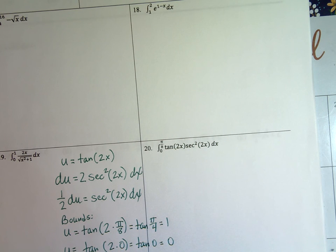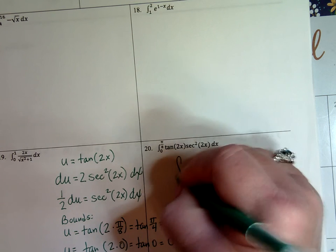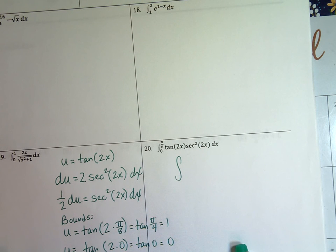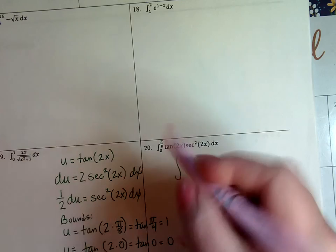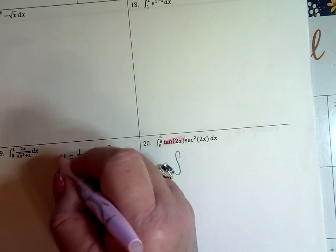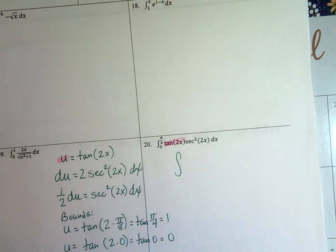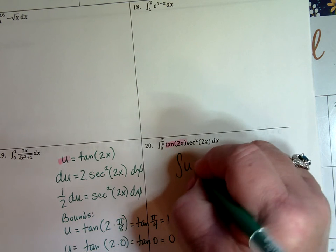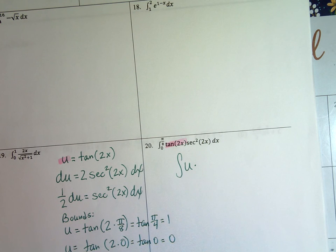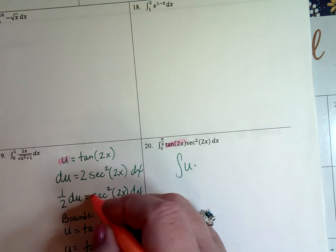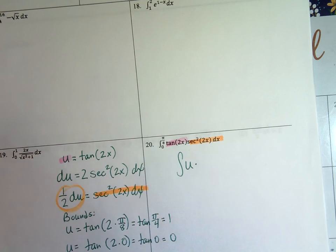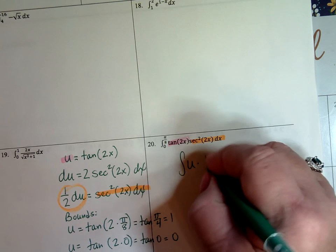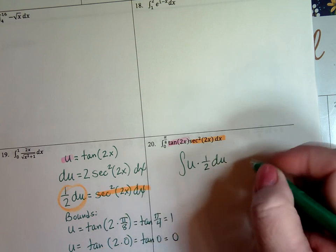Let's see if we can build our integral. Well I know that I should use a different color. I know that this tangent of 2x is what my u is. So if I rewrite this the first thing I have is a u times. And I know that my secant squared of 2x dx, this part here, is equivalent to this, ½ du. My bounds are now from 0 to 1.